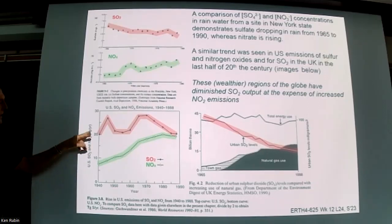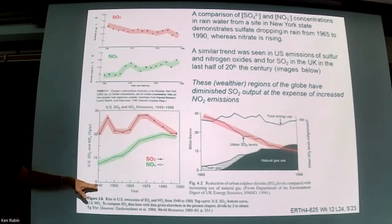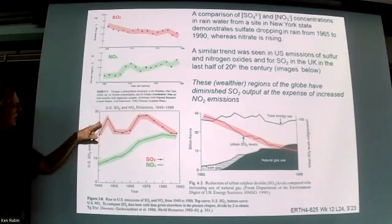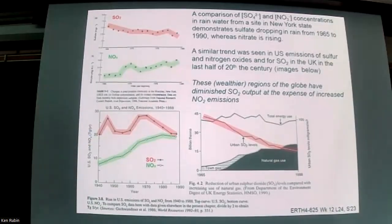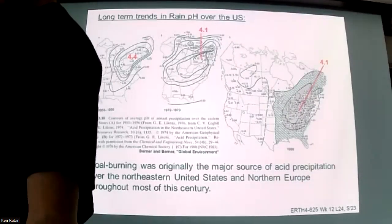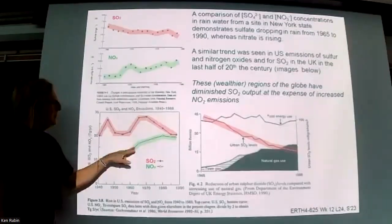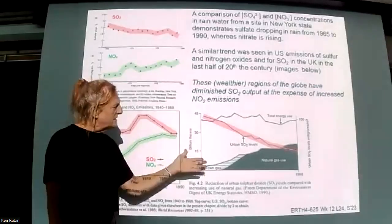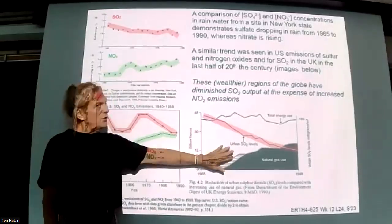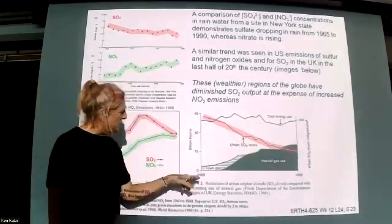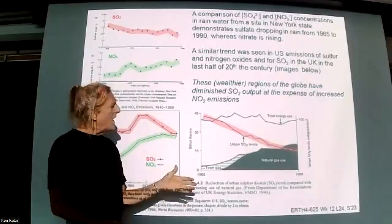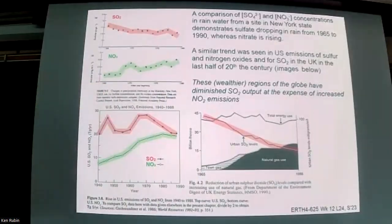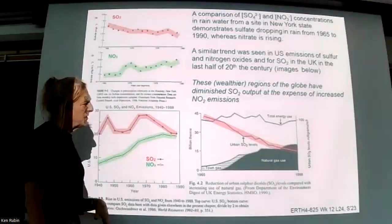US sulfur and nitrogen usage from World War II to 1990 shows a peak after WWII, a rise through the 1950s and 60s, then a decline into the 70s and 80s as the connection to acid rain was recognized. But at the same time, nitrogen oxide usage was going up. A similar plot for the UK shows that while total energy use remained constant between the mid-1960s and late 1980s, there was a rise in natural gas use, which burns at lower temperature, has less sulfur, and produces fewer nitrogen oxides.